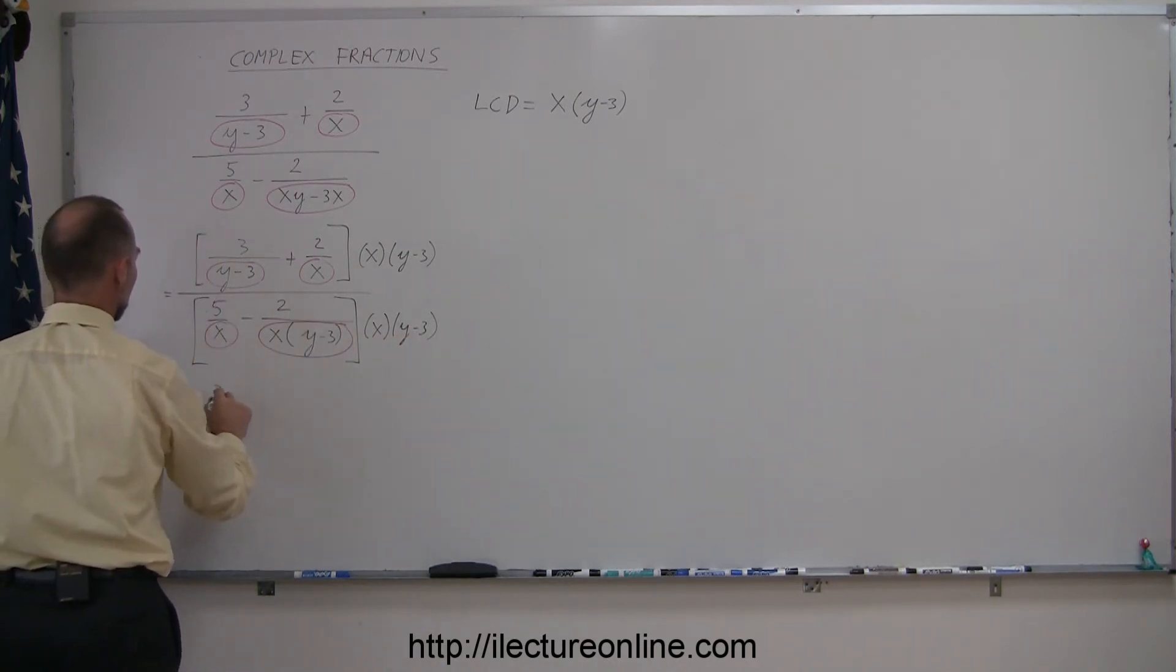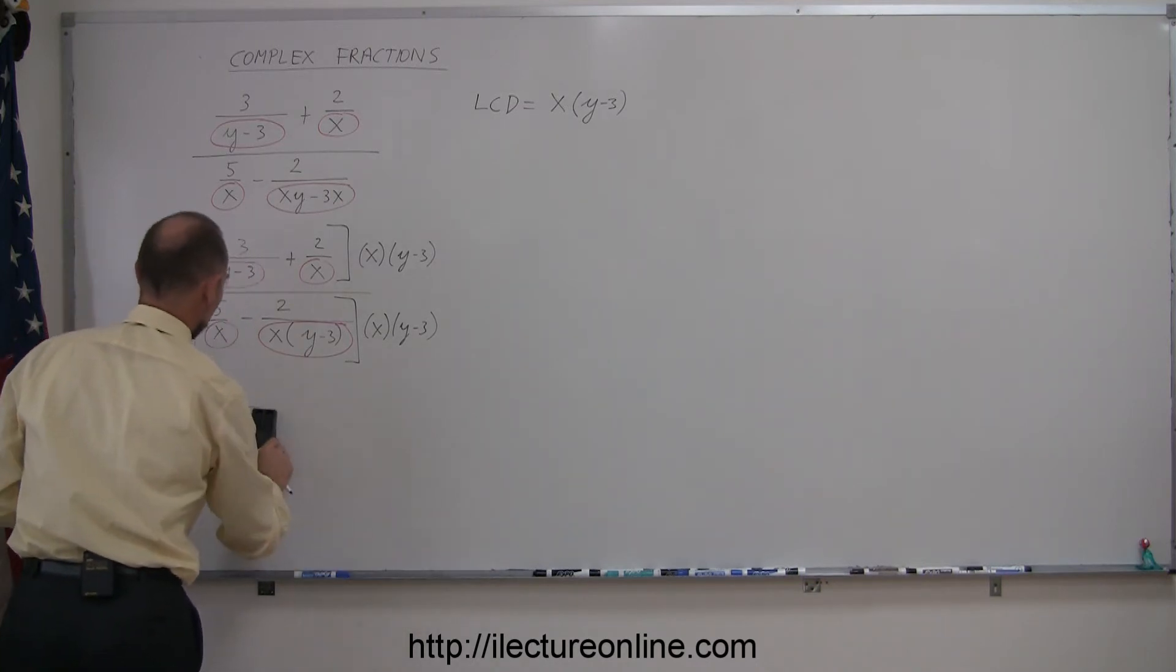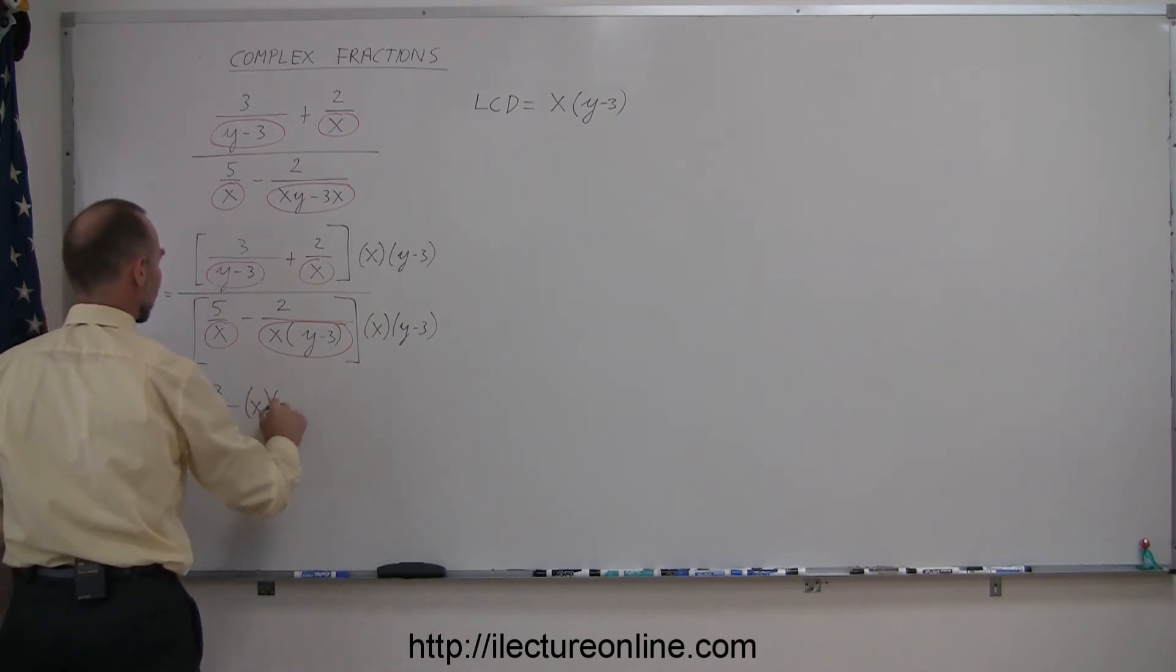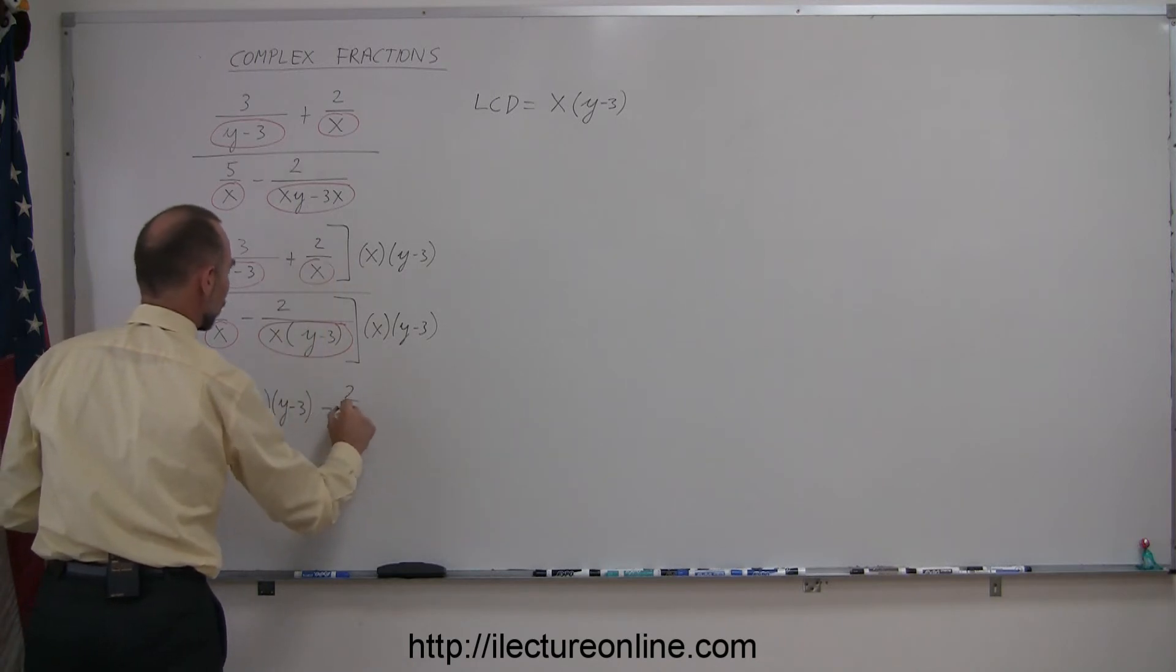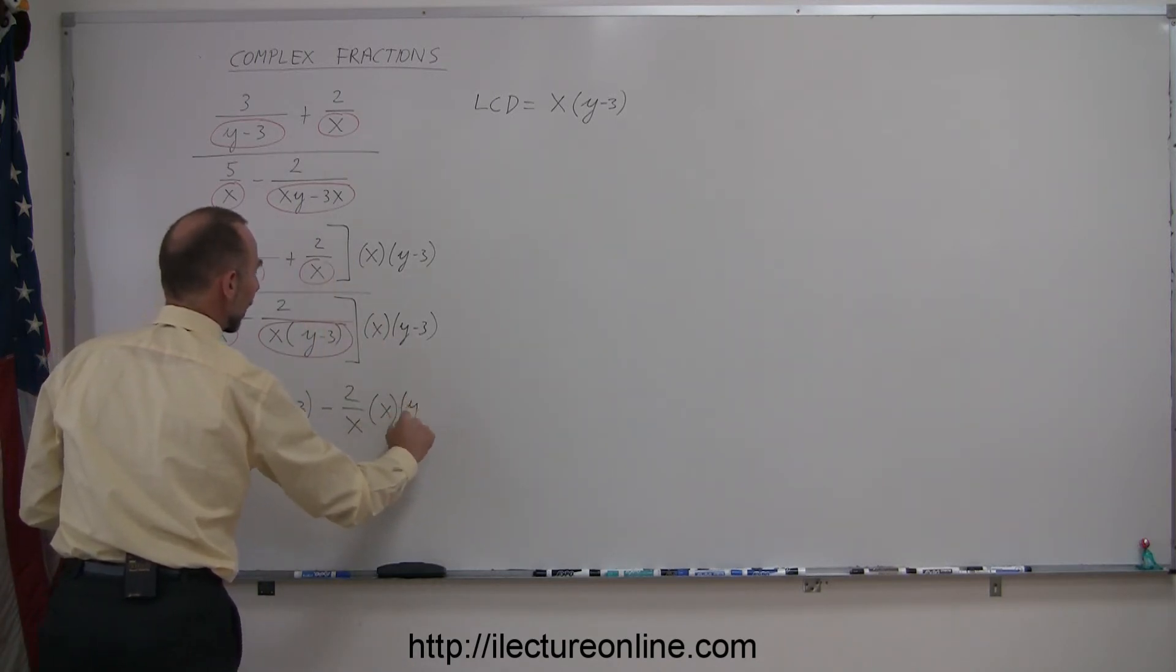So this is equal to 3 divided by (y minus 3), and let me make it a little bit shorter in the interest of space, times x times (y minus 3) plus this fraction, 2 over x, times x times (y minus 3).